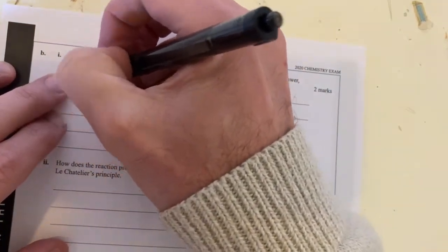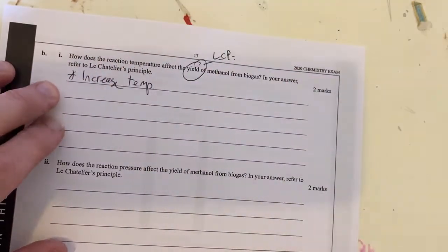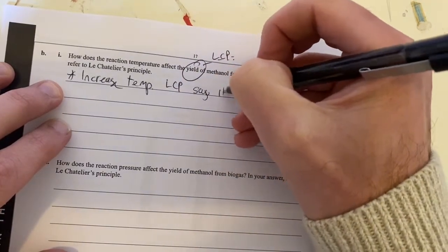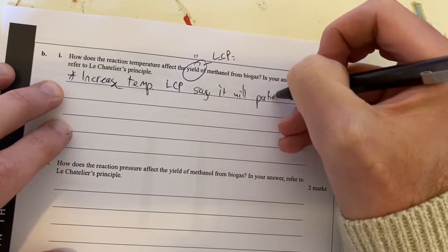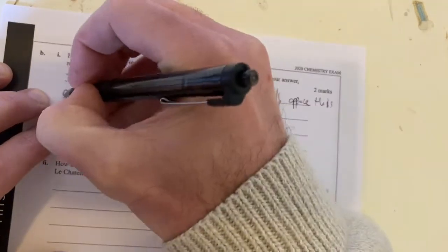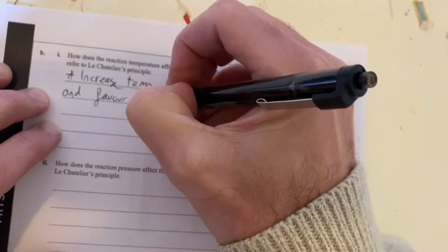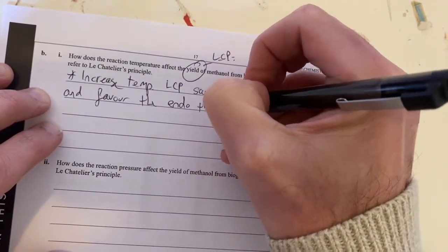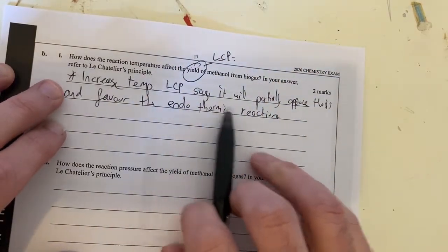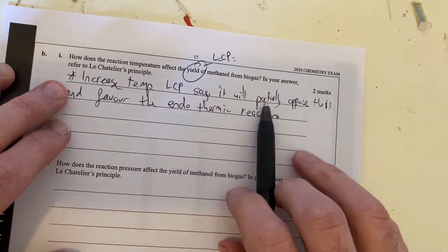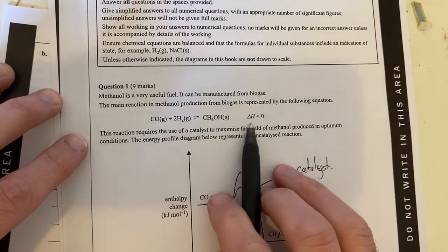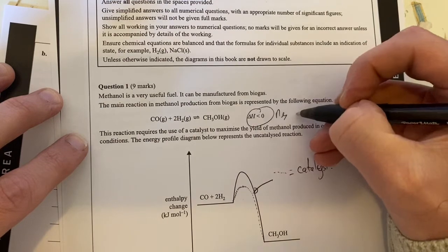If I increase temperature, Le Chatelier's principle says it will partially, remember key words here for Le Chatelier's principle is partially oppose this and favour the endothermic reaction. Our reaction here, if I just look at this, our reaction here is delta H is negative, so therefore it's exothermic.